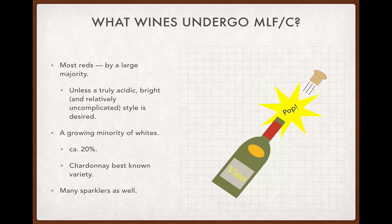This process is also no stranger to sparkling wines — perhaps no surprise, since a lot of sparklers, particularly traditional method sparklers, are made from malo-friendly grapes like Chardonnay, though of course many are not.